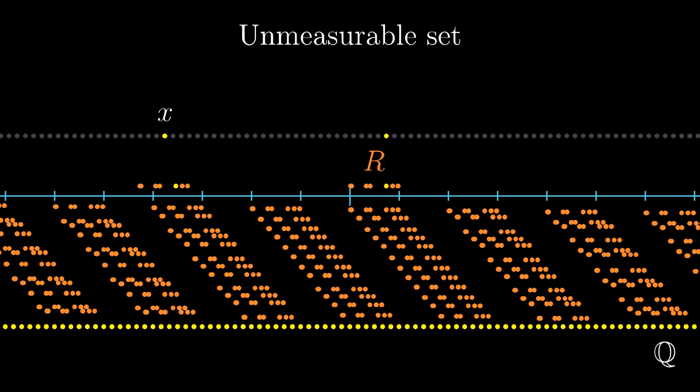If we shift this representative by an appropriate rational number, we cover x. So x was covered by r shifted by all the rational numbers.